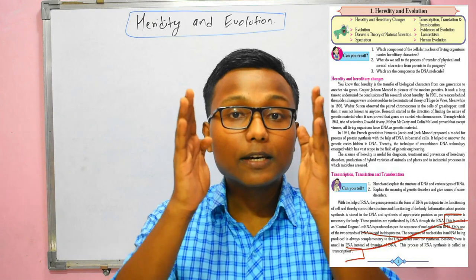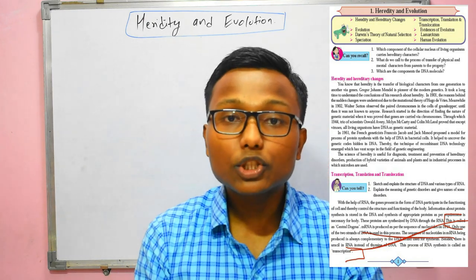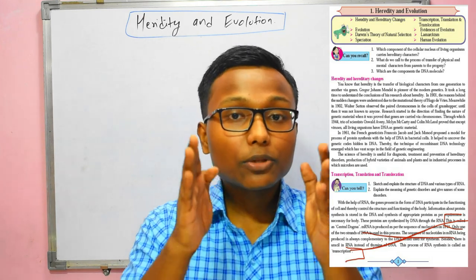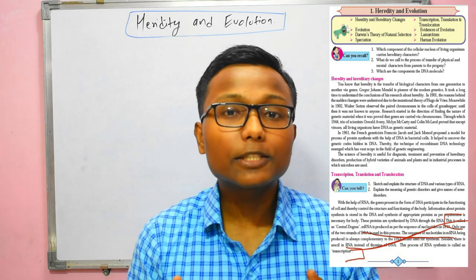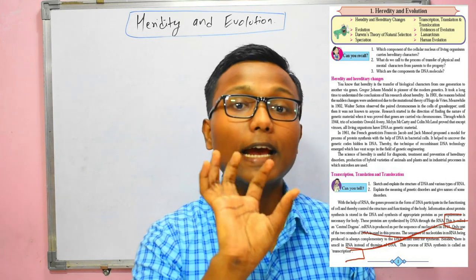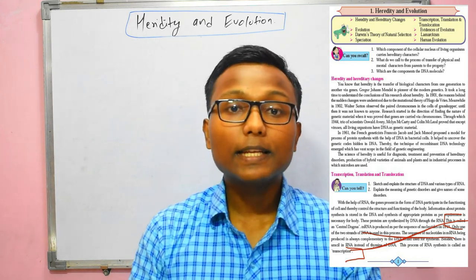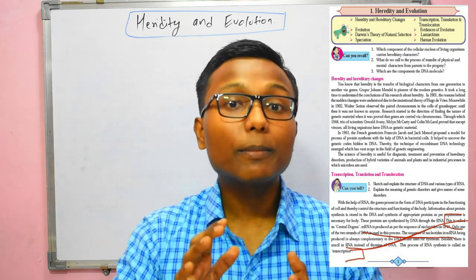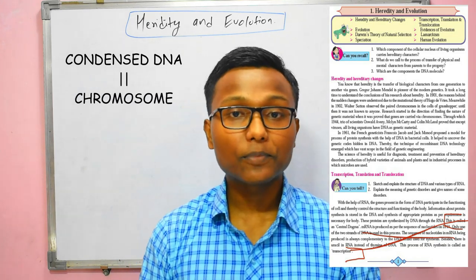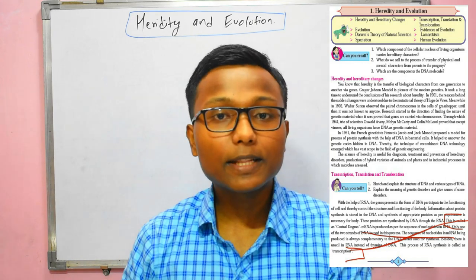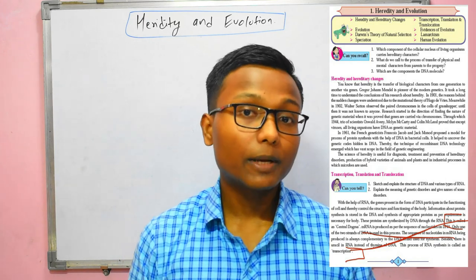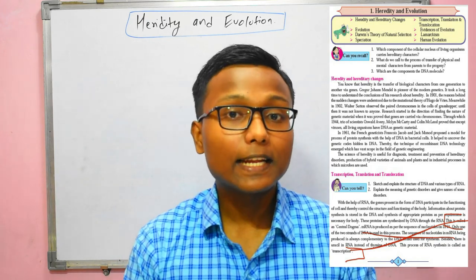DNA is double-stranded, meaning it is made of two strands, while RNA is single-stranded. DNA exists in a helix form — a twisted form — so DNA has a double-stranded helical structure. The condensed form of DNA is the chromosome. There are three types of RNA: rRNA, mRNA, and tRNA.